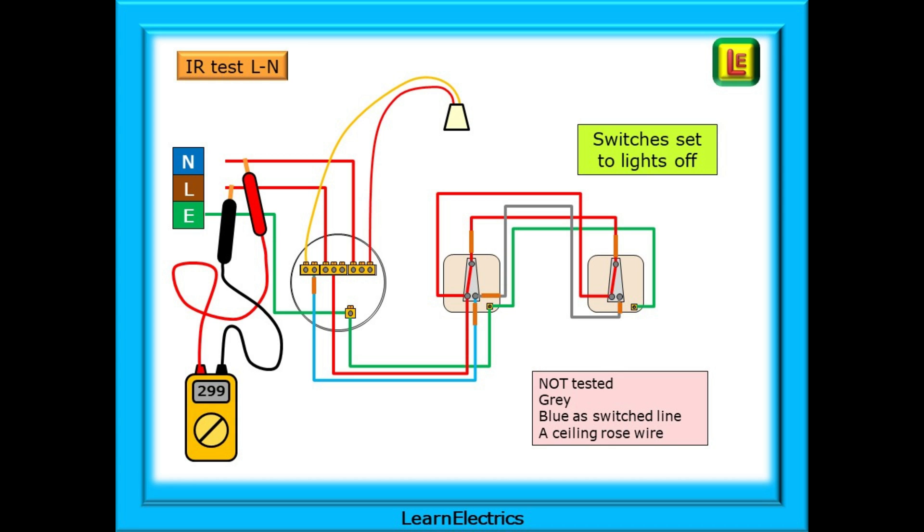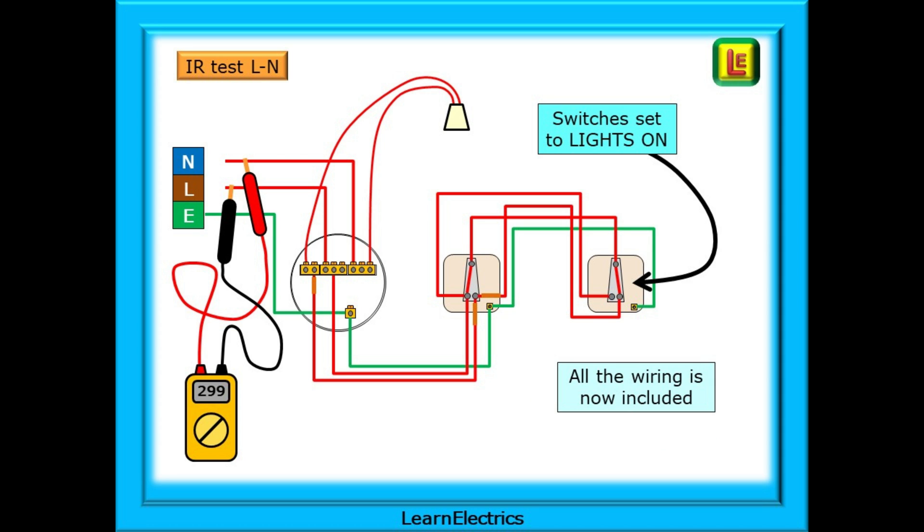Now put the probes onto the line and neutral wiring. Again, with the switches set to the lights off position, the red coloured wires are the ones being tested. With the switches set to lights on, all the line and neutral wiring is being tested and hopefully you can see the importance of always doing two IR tests for each wiring combination. By testing once and then operating just one light switch and testing a second time, you can be certain that you've included all the circuit conductors for that test.